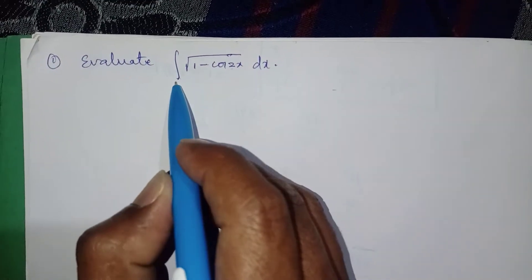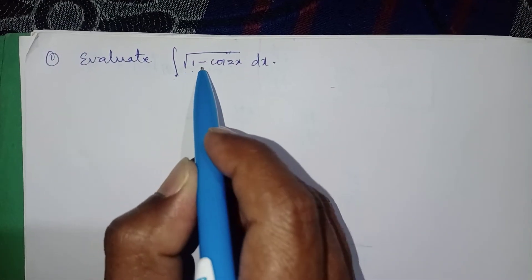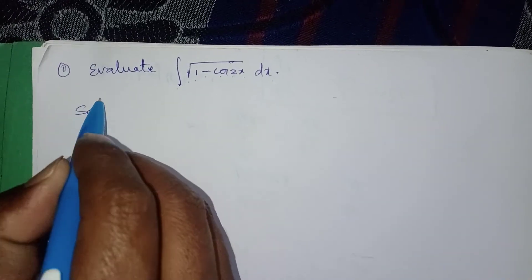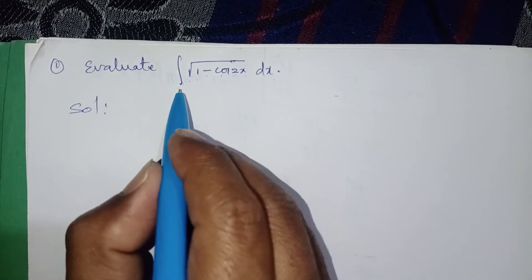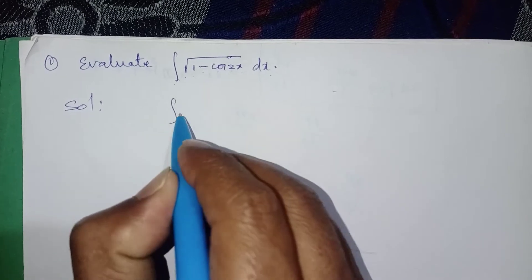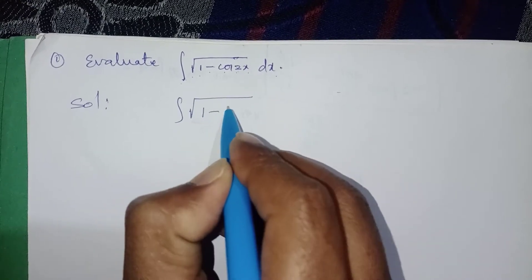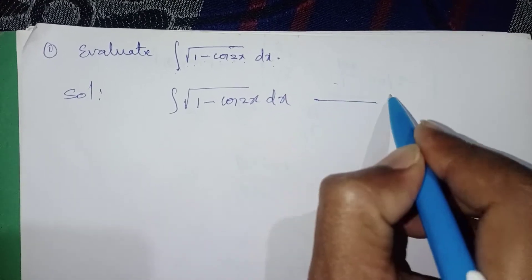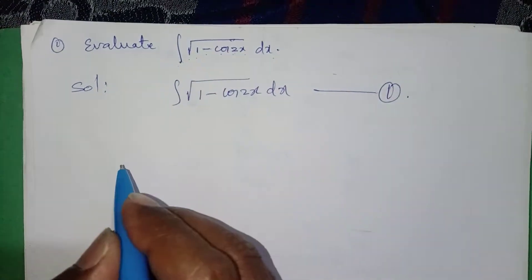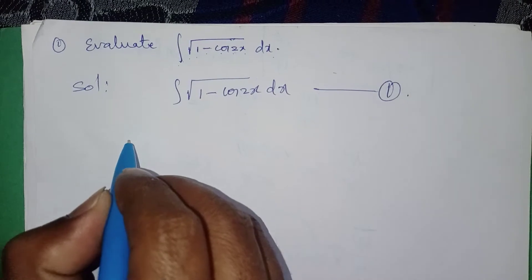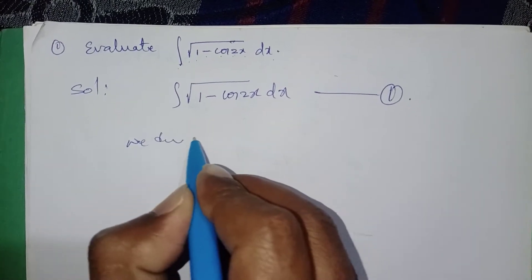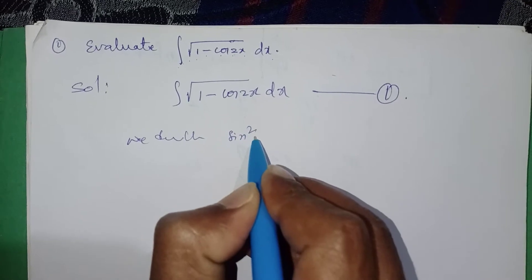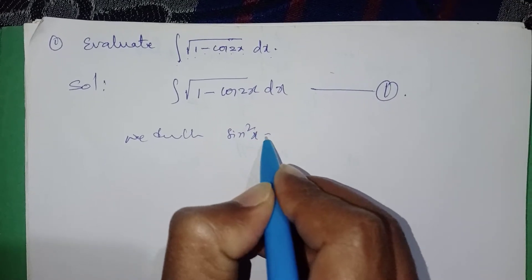Evaluate the integral of √(1 - cos2x) dx. Write down the given question: integral of √(1 - cos2x) dx. Consider it equation number 1.